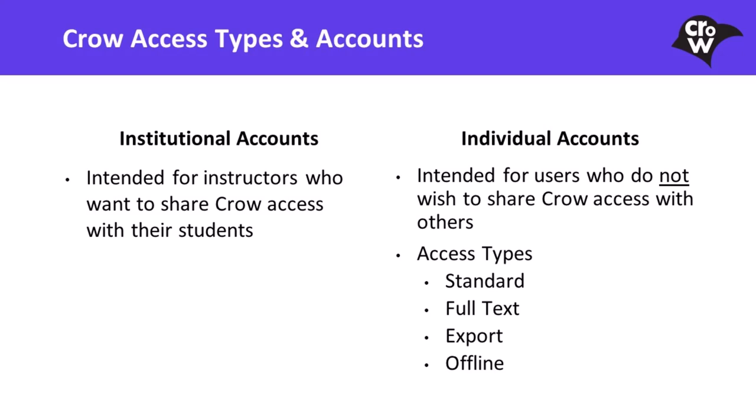CROW offers two account types: institutional accounts for instructors who want to share CROW access with their students, and individual accounts with four types of access. As you register for CROW, you can request more than one type of individual access for your account. Individual accounts are accounts specifically for individual access. These accounts cannot be shared. Individual accounts have four levels of access: standard, full text, export, and offline.